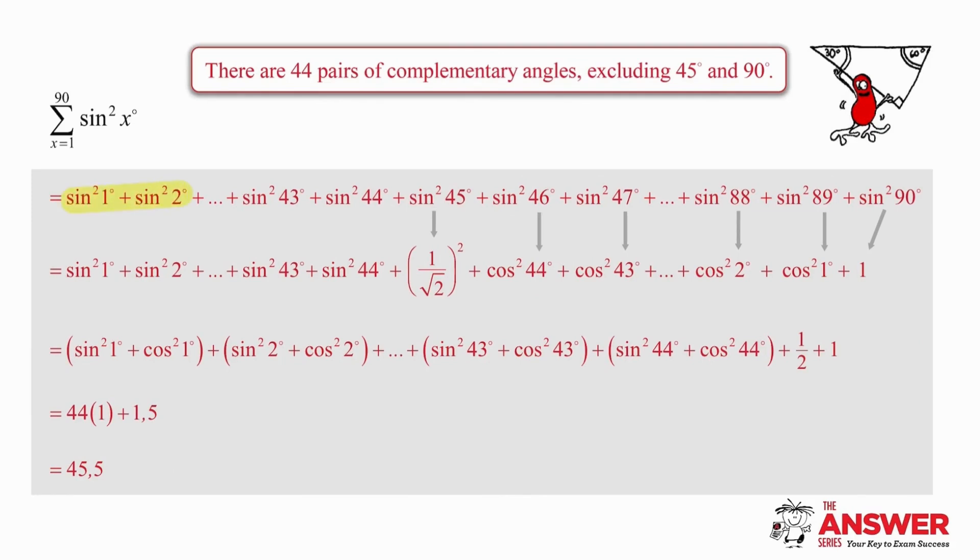We start by expanding the statement we've been given. So we write out the first few values. We write out several values across the middle section and we write out the last few values. It is impossible to write everything out, so we indicate that we have continued the pattern, but not given all the detail. Now we need to check if we can pair all of these values off with each other, looking at complementary angles. And we find that there are two problems. The first one is the fact that the sin squared of 45 degrees can't find a partner because 45 degrees does not have a complementary angle in the selection. So we replace the sin squared of 45 degrees with 1 over root 2 all squared. Right on the end, we have a second issue. 90 degrees does not have a partner because there's no complementary angle to 90. So we replace the sin squared of 90 degrees with 1.